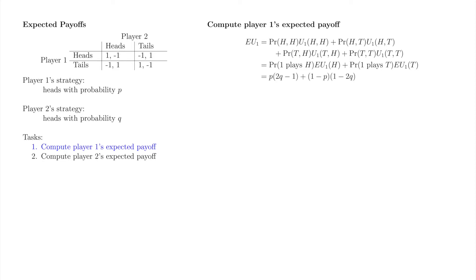The probability player one plays heads is p and the probability she plays tails is 1-p. As we determined earlier, EU1 of h is 2q-1 and EU1 of t is 1-2q.